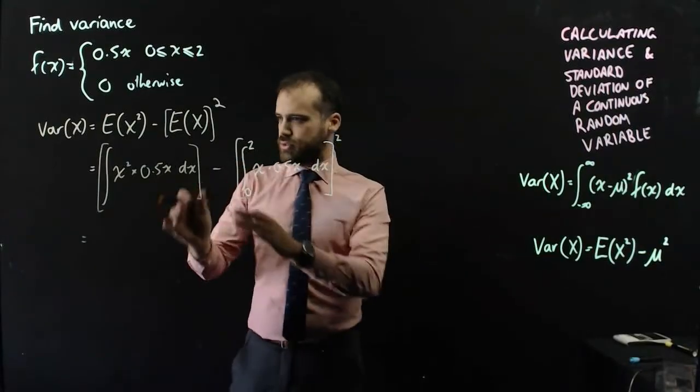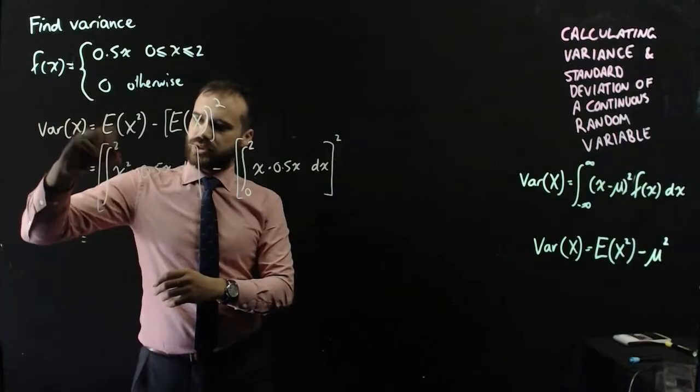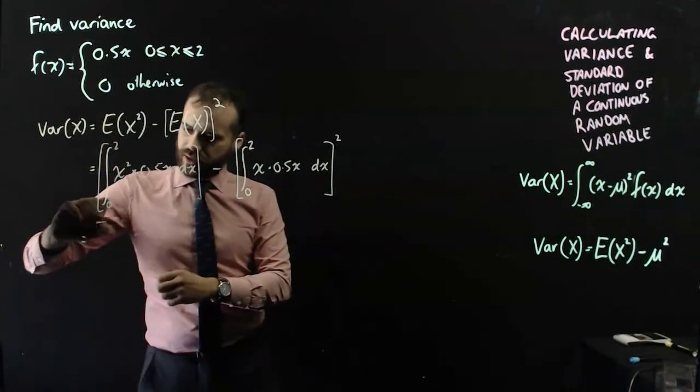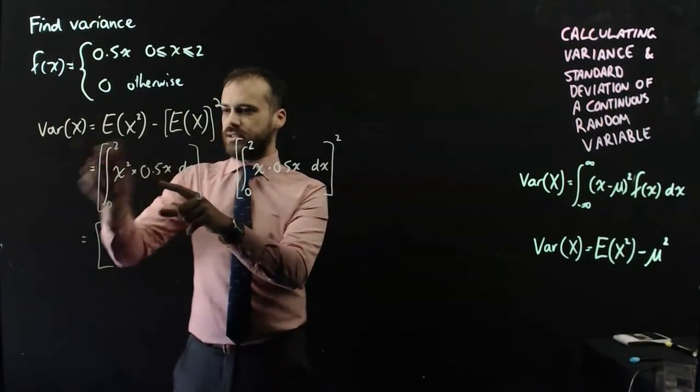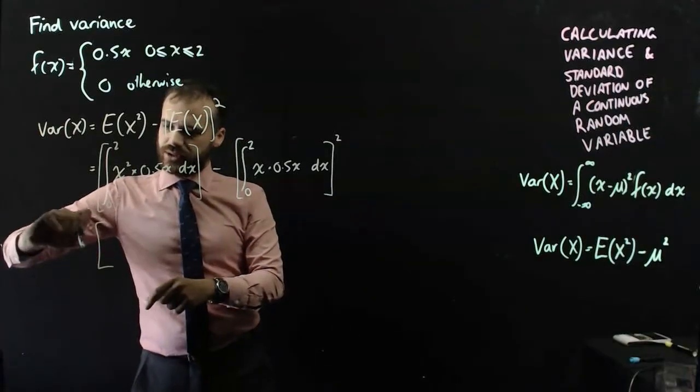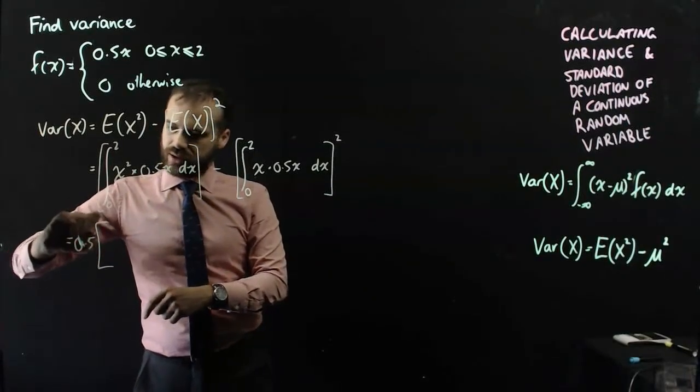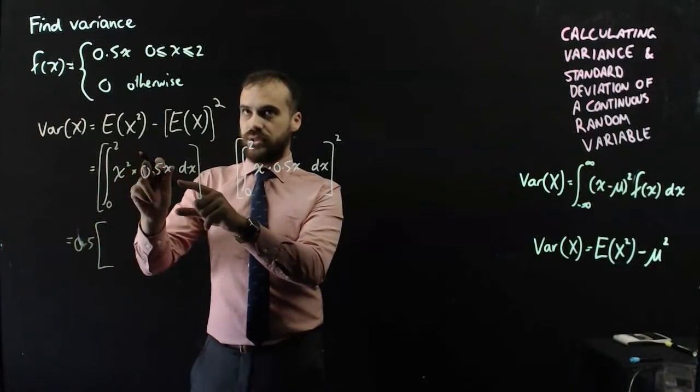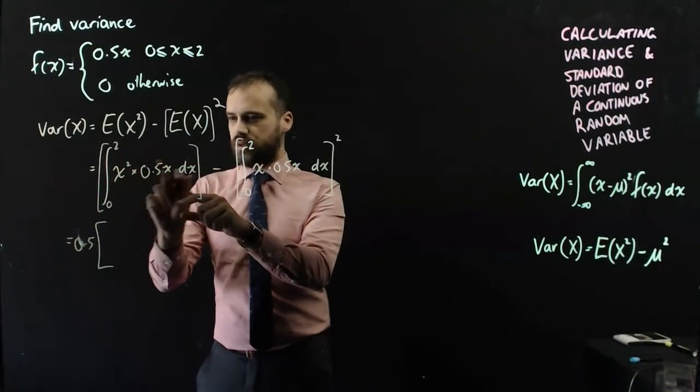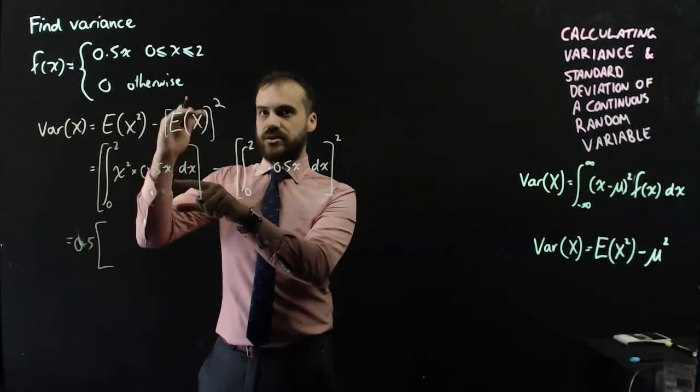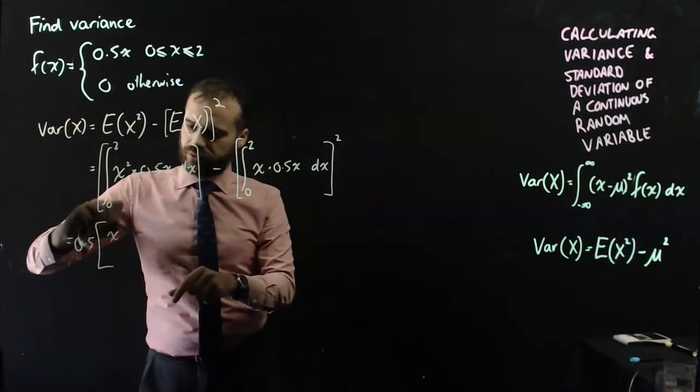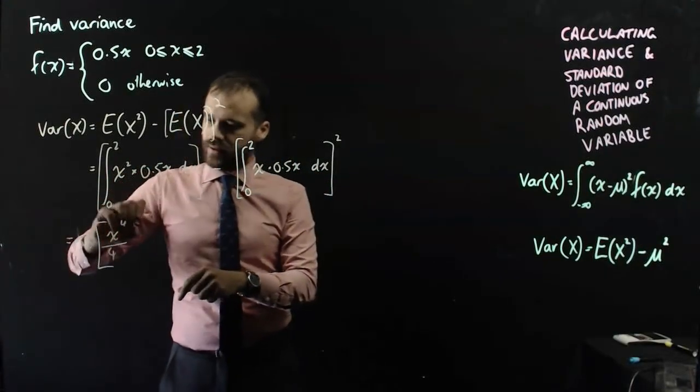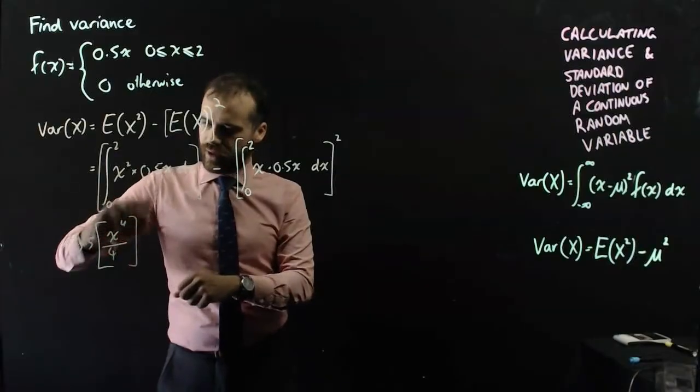Now, I'm going to jump through this one really quickly, and the integral is between 2 and 0. Now, I can take out the 0.5, which I will do, because there's just so much going on here. So, 0.5, we've got x cubed, so that's going to be x squared times x is x cubed. I'm going to raise it to the power x to the 4, and divide by 4.